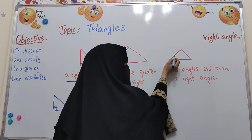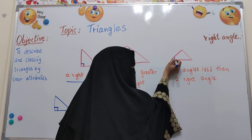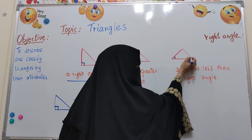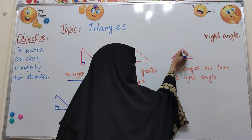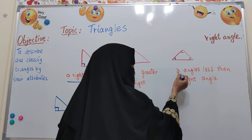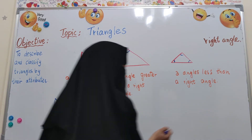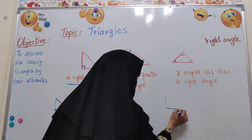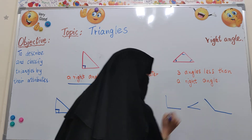If you see properly, this angle is less, this angle is also less, and this angle is also less. That's why I am saying that three angles less than a right angle. This is a right angle, this is less than, and this is more than.